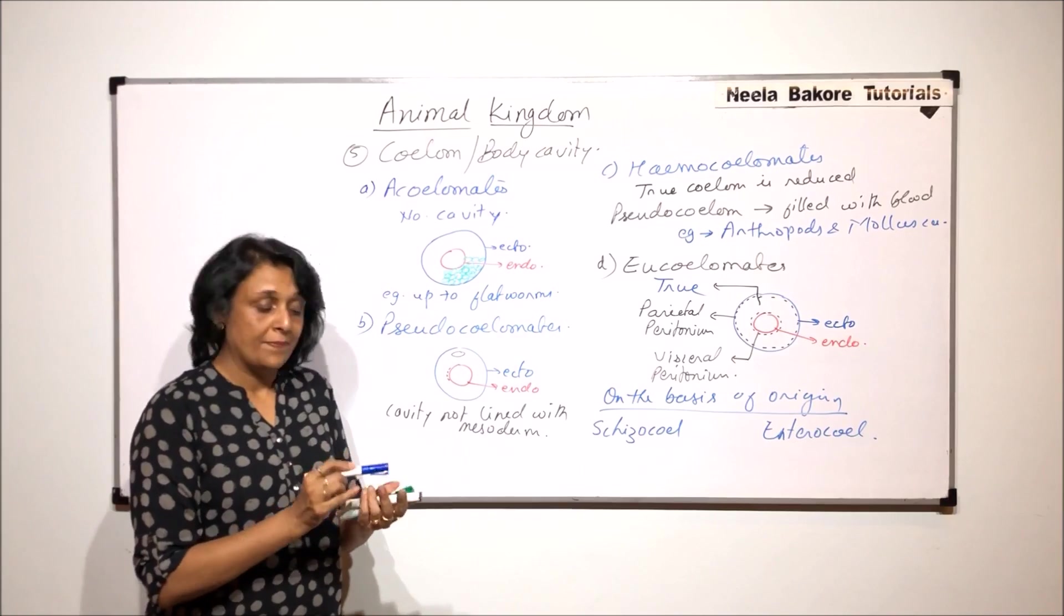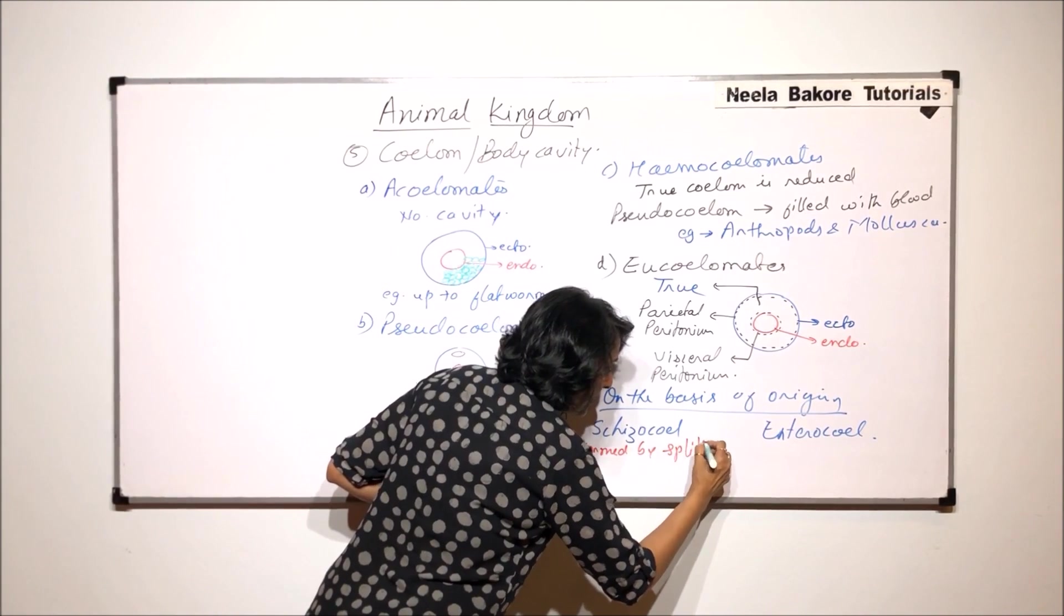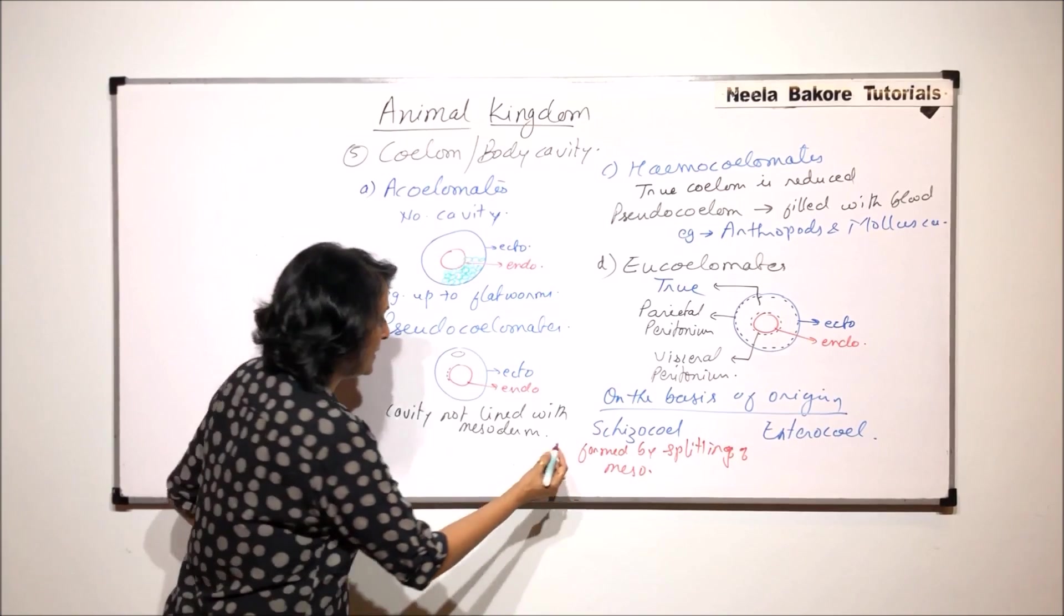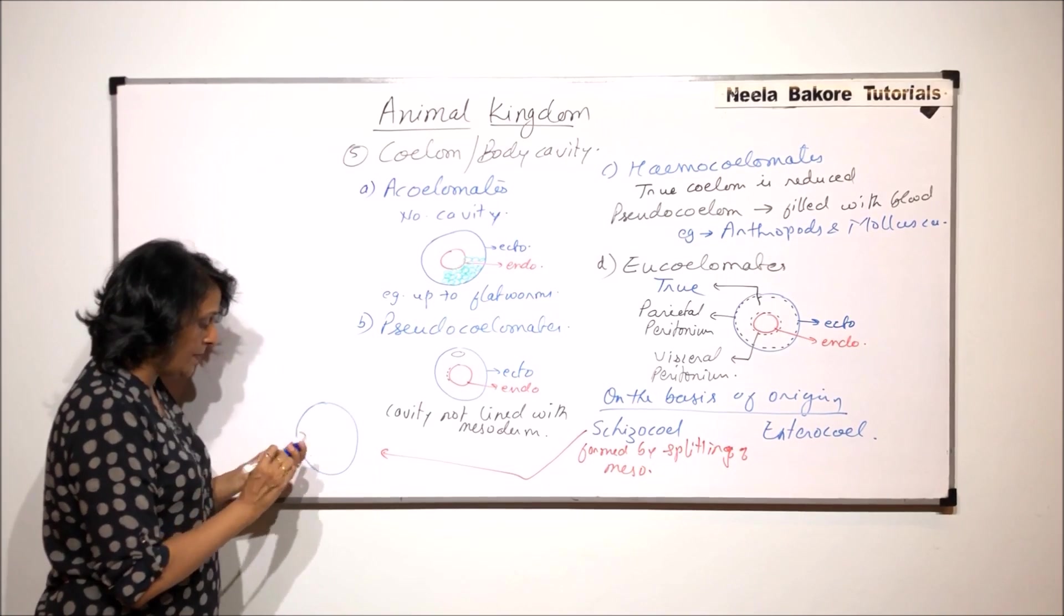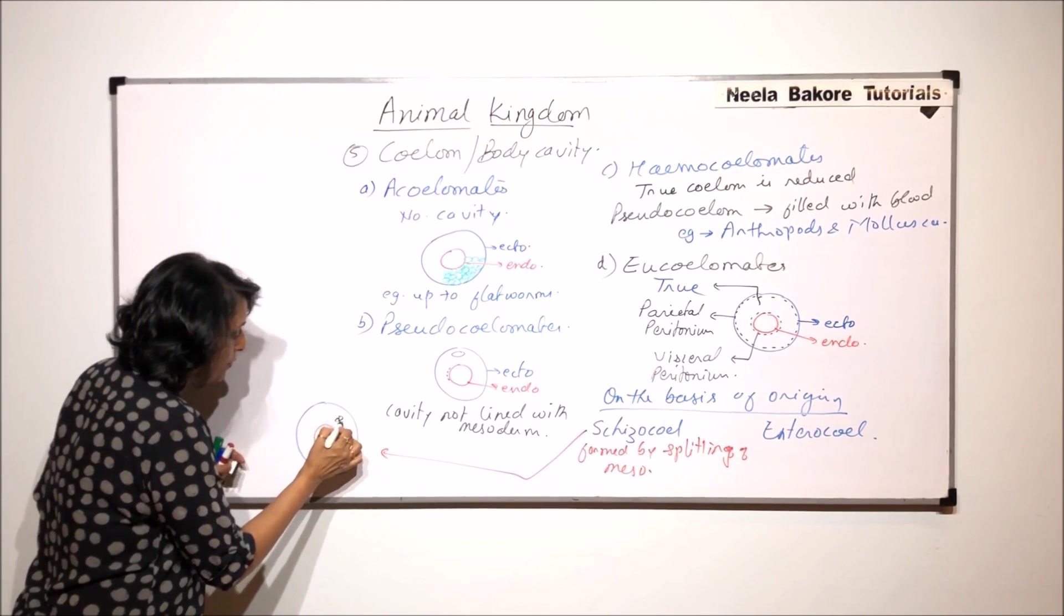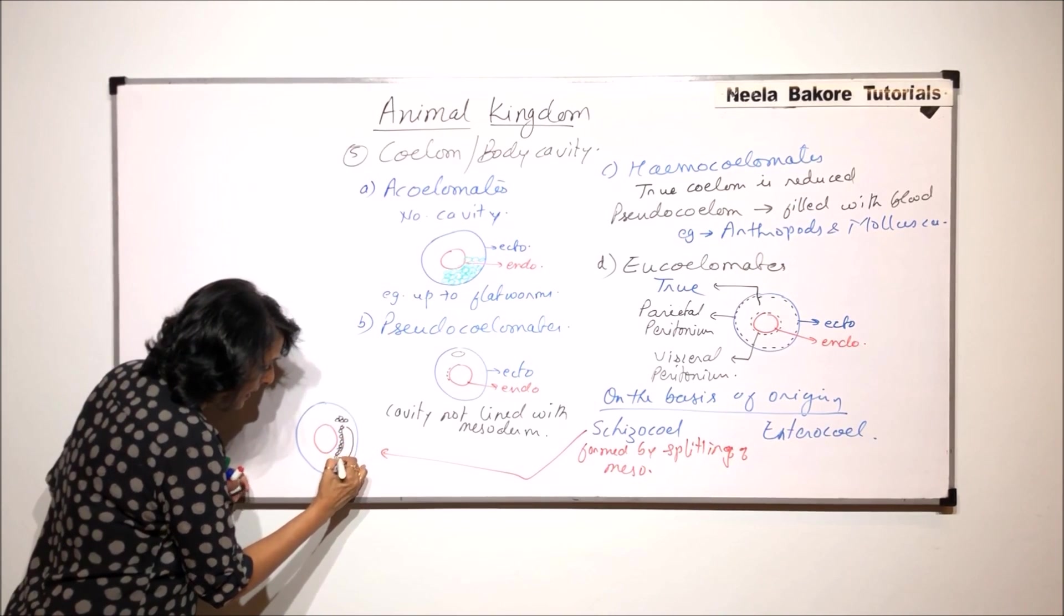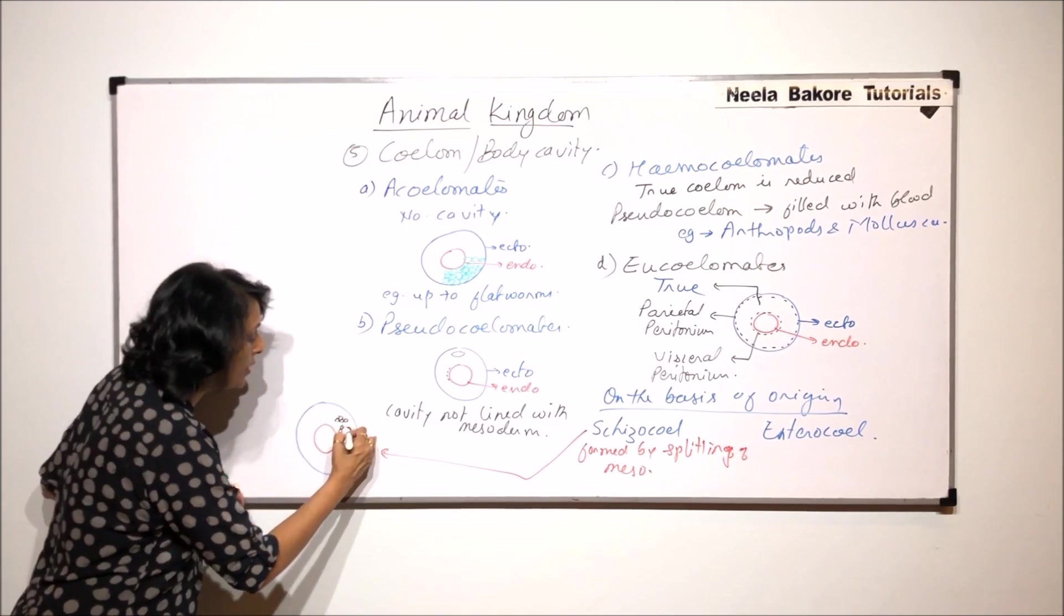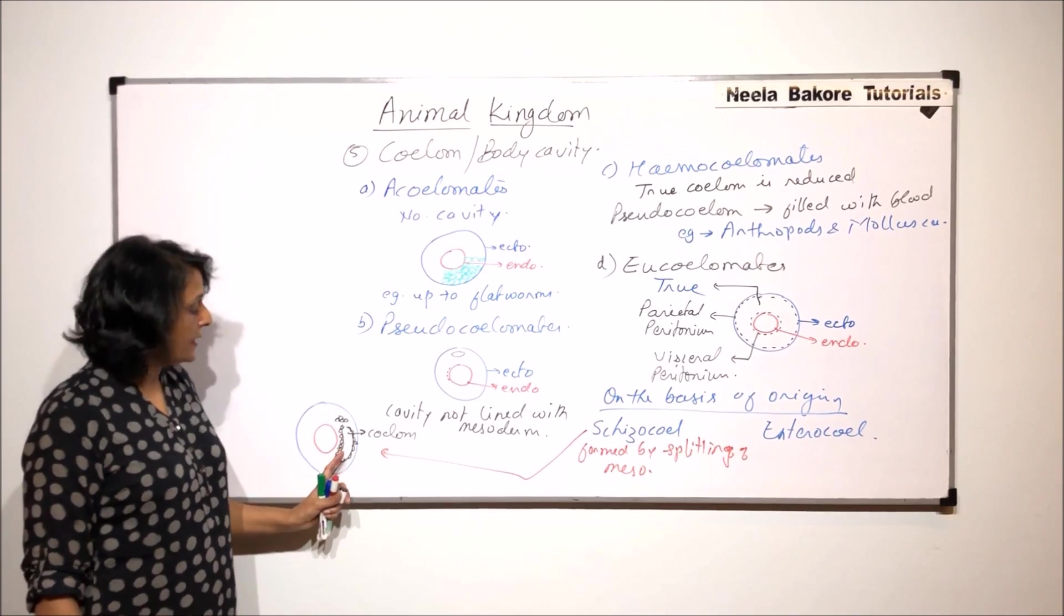Schizocoelom is the coelom or body cavity which is formed by splitting of mesoderm. Now, what exactly we mean by this? If I draw it here, then again let us draw the same thing. This outer is ectoderm, the inner one is endoderm. And the mesoderm, this is a mass of cells, and now there is splitting. Because of the splitting, what happens is the mesodermal cells, they develop a cavity. And this layer will go closer to ectoderm, this will go closer to endoderm, and this is going to be the coelom. That is, the mesodermal mass splits and the cavity develops here.